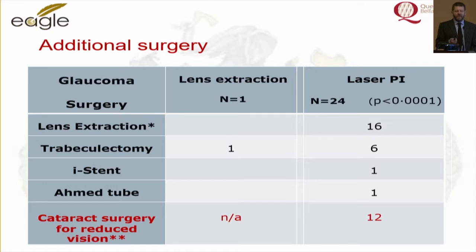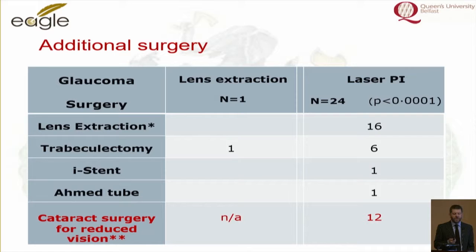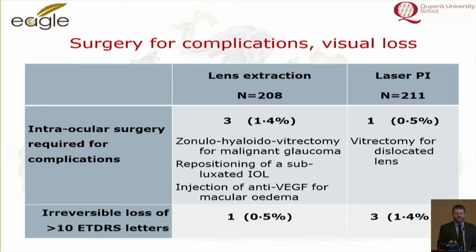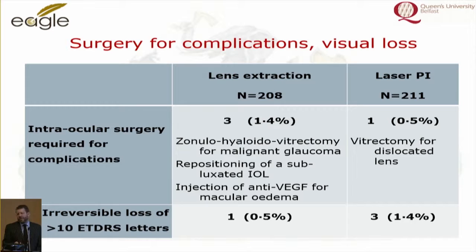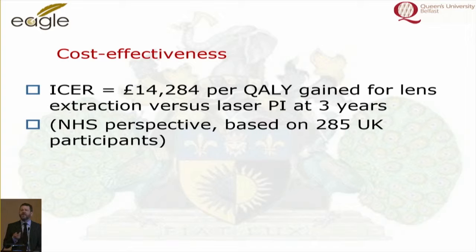In the peripheral iridotomy group, 16 lens extractions were performed for uncontrolled intraocular pressure, and a number for visual acuity reasons. That group also had a much greater number of trabeculectomies, plus one each with an eye stent and tube. There was no visual field difference between the two groups, as expected since both were actively treated for pressure. Surgical complications were small and not thought significant, including one dislocated lens from the iridotomy group. The intervention was cost-effective on UK cost analyses.